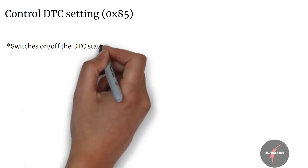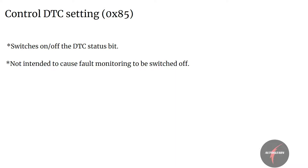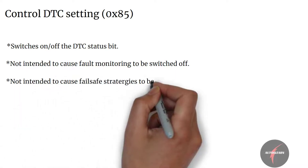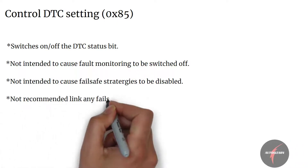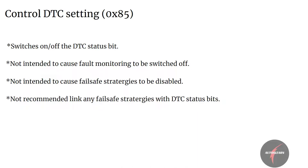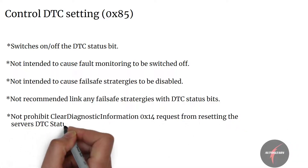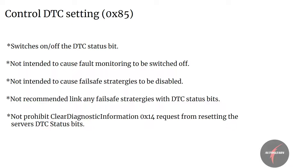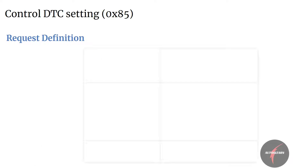Control DTC Setting only switches on or off the DTC status bit updating. Control DTC Setting is not intended to cause fault monitoring to be switched off, nor is it intended to cause fail-safe strategies to be disabled. It is also not recommended to link any fail-safe strategy with the DTC status bits. Control DTC Setting shall not prohibit Clear Diagnostic Information (0x14) requests from resetting the server DTC status bits.